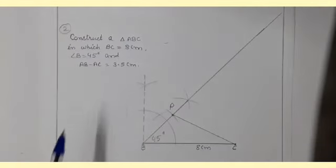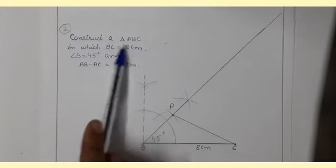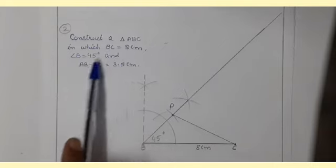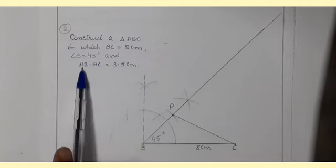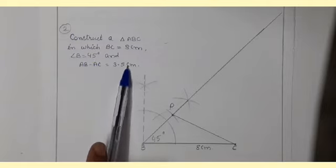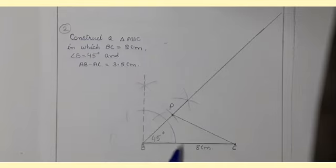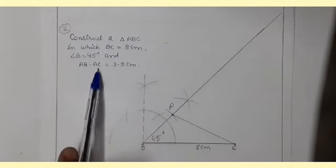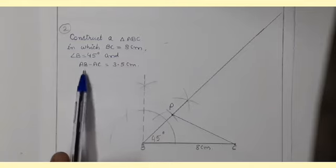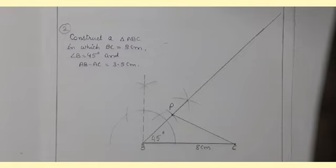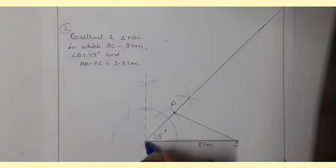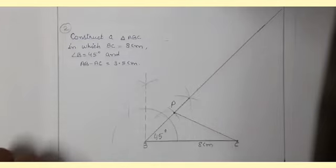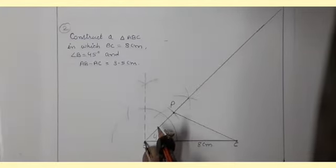Question number 2: Construct a triangle ABC in which BC is equal to 8 centimeter, angle B is equal to 45 degrees, and AB minus AC is equal to 3.5 centimeter. Draw BC of 8 centimeter with help of scale, then make 45 degrees with help of compass. Since AB minus AC equals 3.5 centimeter, you have to cut one arc of 3.5 centimeter from B.